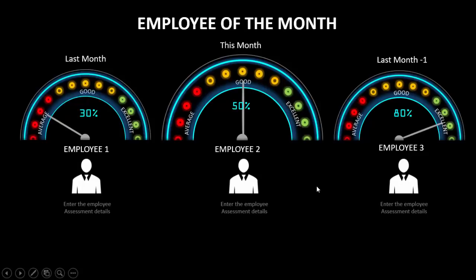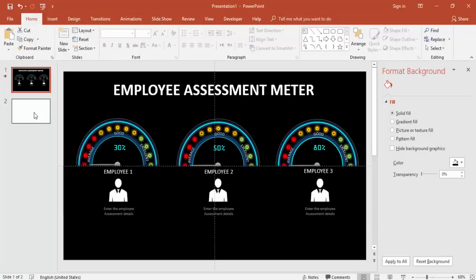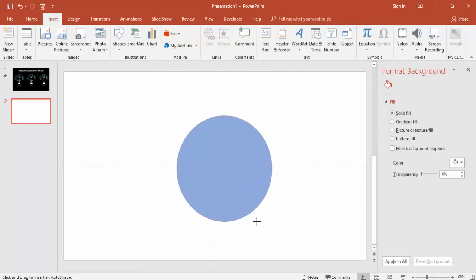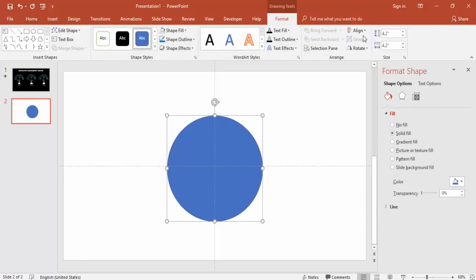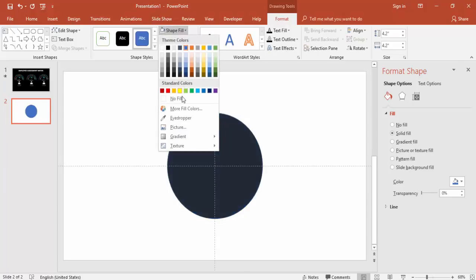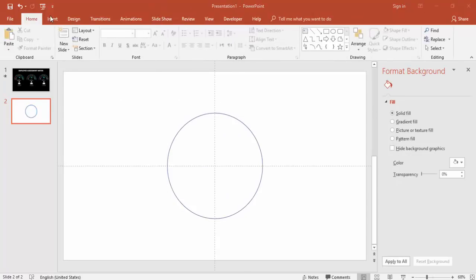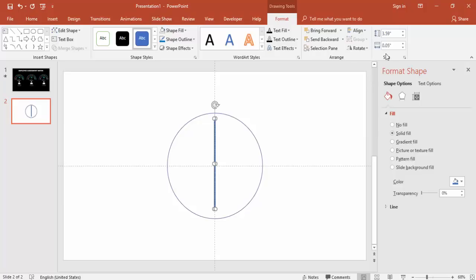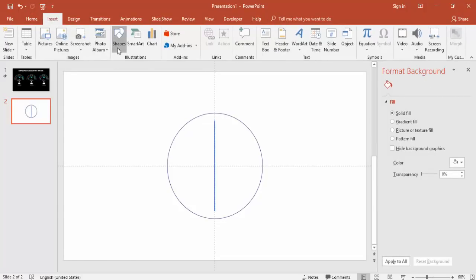Let's see how to do this in PowerPoint. Add a new slide, go to Insert > Shapes, select an oval, and drag the shape while holding the Shift key. Make it align center and align middle, then set the shape fill to no fill. Go to Insert > Shapes again and select a rectangle, draw it, then make it center and middle with no outline.